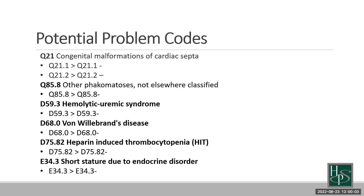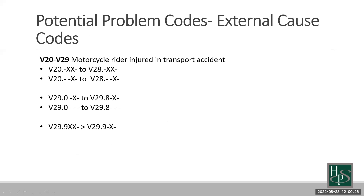Less frequently we will see some congenital and hemolytic disease code sets expanding, and short stature due to endocrine disorder — something we don't see very often in home health, but if you do see it there is a new expanded code set. Reiterating the external cause code changes: the only changes in this biggest group are all related to patients who have an injury related to a motorcycle or motorized bicycle accident, which will be a very small subset of our patient population.